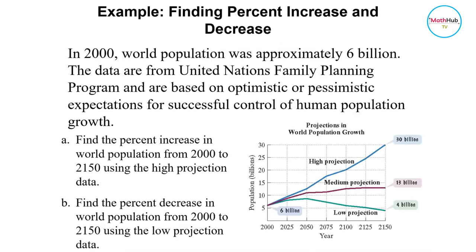For example, in 2000 the world population was approximately 6 billion. The data are from the United Nations Family Planning Program and are based on optimistic or pessimistic expectations for successful control of human population growth. Find the percent increase in the world population from 2000 to 2150 using the high projection data. This is for the medium projection, and then for the low projection.